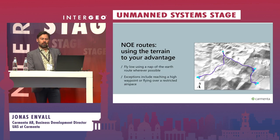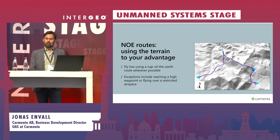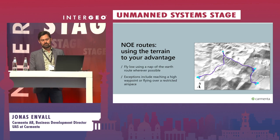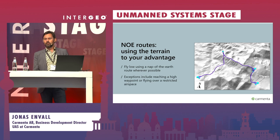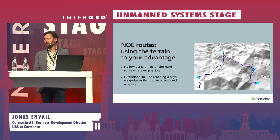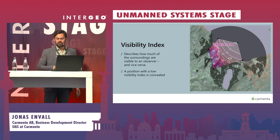Let us look at an example of a nap-of-the-earth route. The route goes from the waypoint on the left, up to the waypoint on the top, and then continues using the ridge — which is the shortest route — then back to the waypoint on the right. This is the fastest route for nap-of-the-earth flying between these waypoints. It's fast, but it's not so safe because you're quite visible. So let us introduce the visibility index concept.